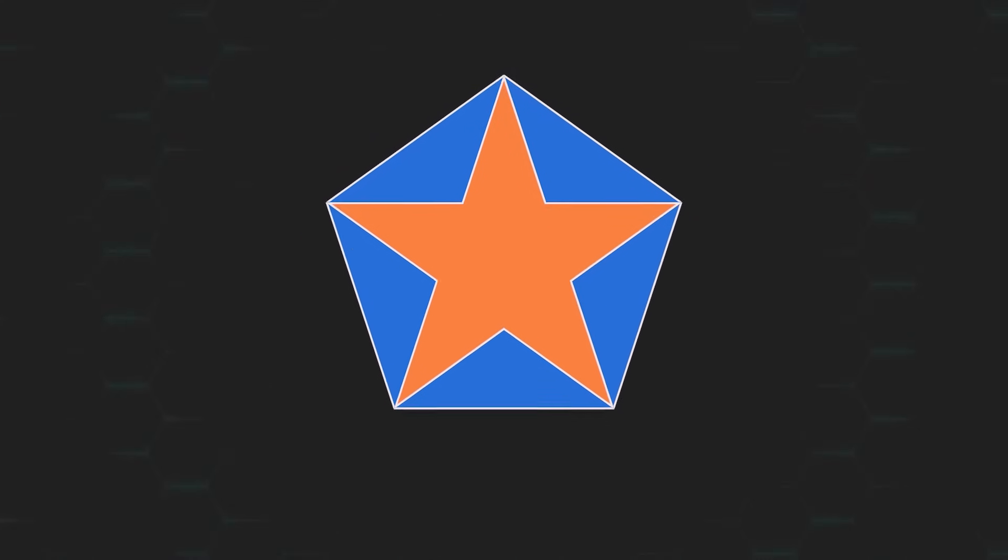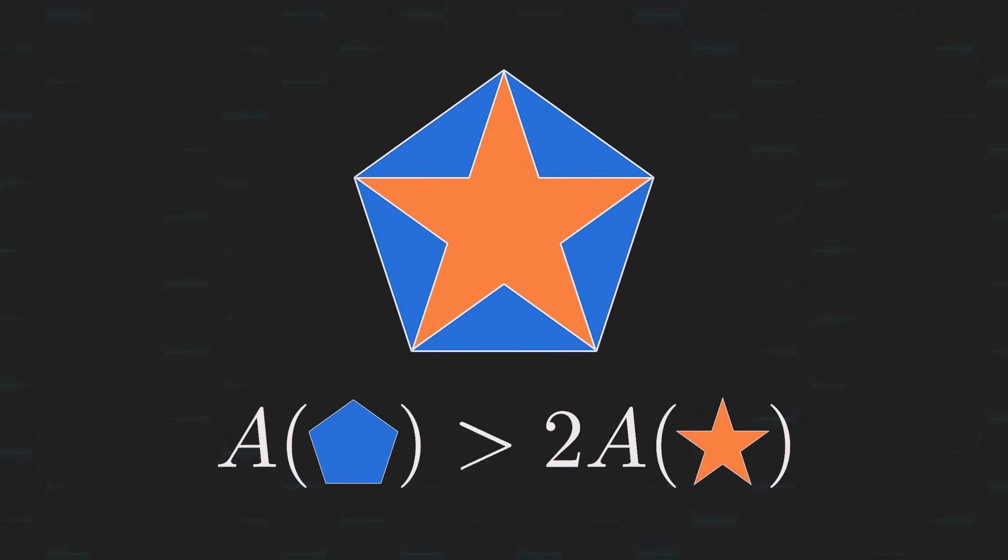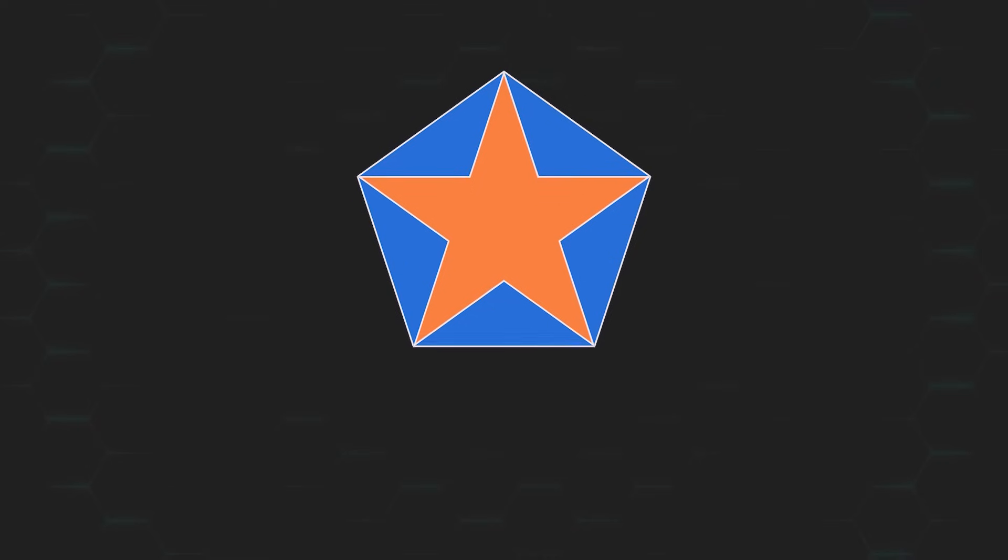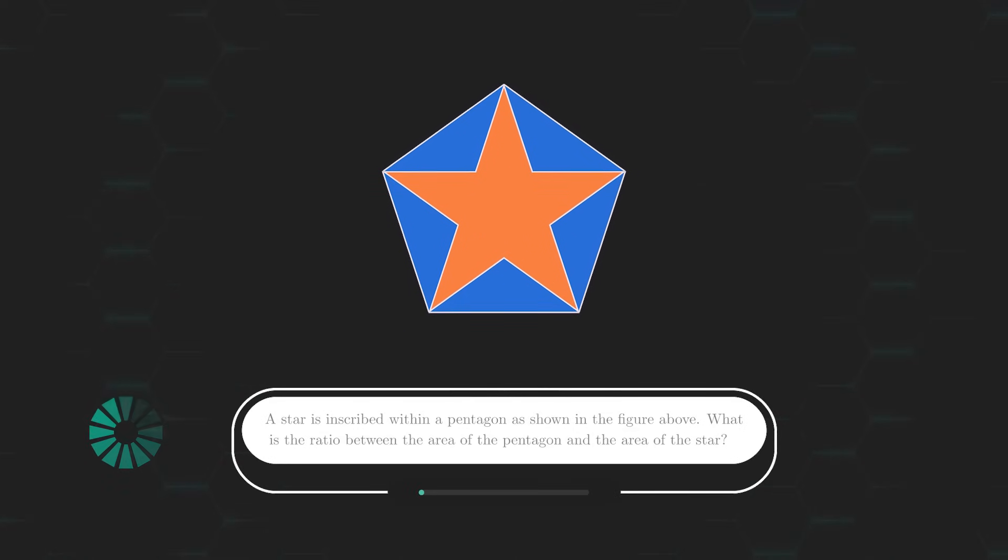Now, for those seeking a slightly easier version of this problem, try proving whether the area of the pentagon is more than twice, less than twice, or exactly twice the area of the star. And keep in mind that you can answer this without having to do any tedious calculations. Okay, here's your chance to pause the video if you'd like to take the time to try the problem out for yourself before we go through it together.